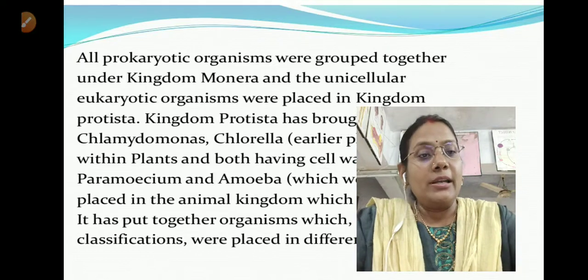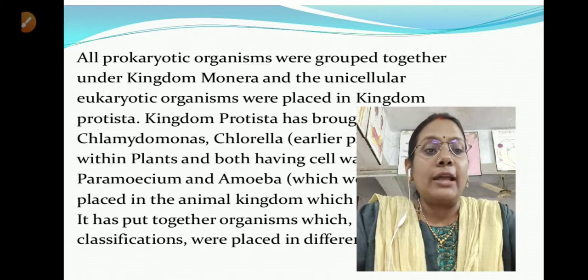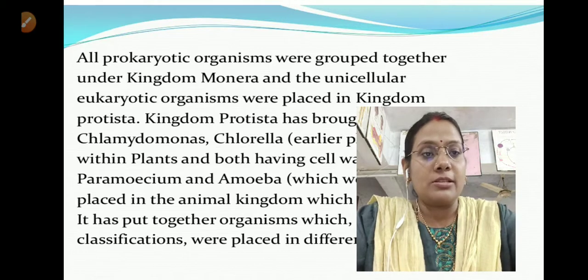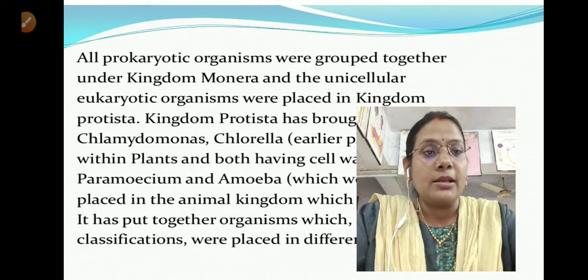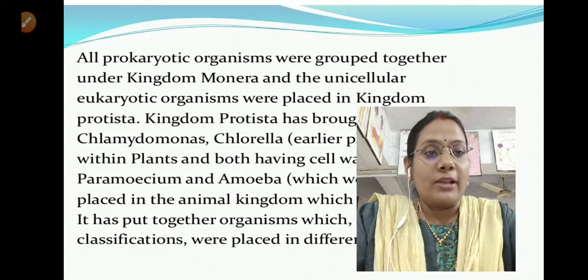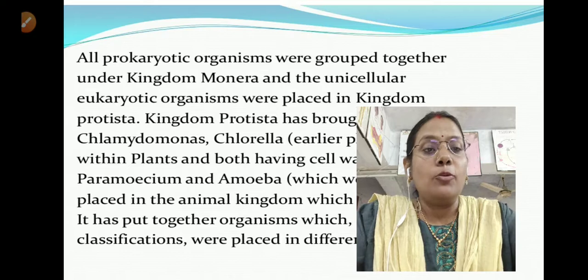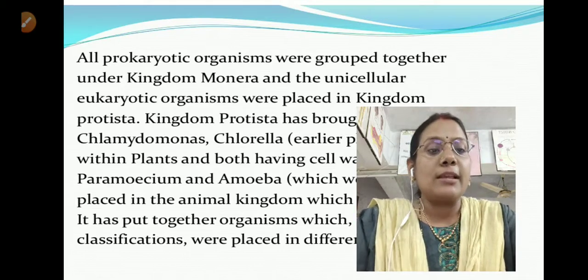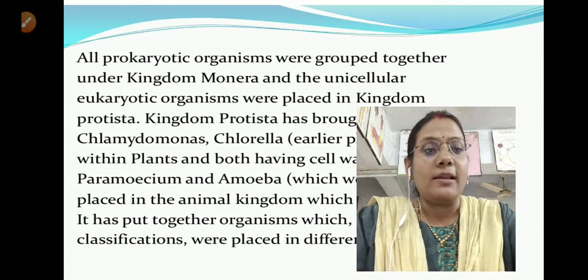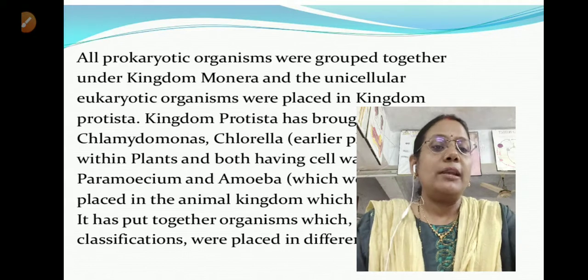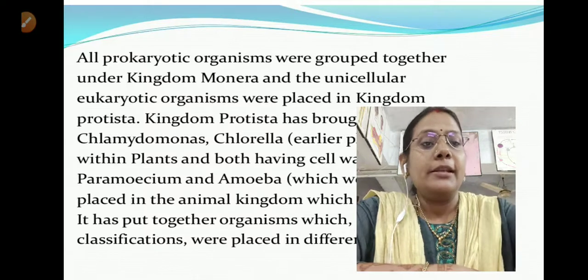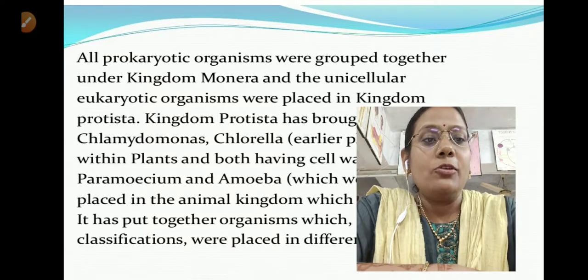In this video we read different types of classification systems: Aristotle was first to give classification, then Carolus Linnaeus gave two-kingdom classification, then R.H. Whittaker gave five-kingdom classification which is very important - draw Table 2.1 in your copy and remember the characters of all kingdoms. Finally, Carl Woese gave six-kingdom classification also called three-domain classification. In the next video, we will study characteristics of each separate kingdom. Read the book and prepare your notes. Thank you.